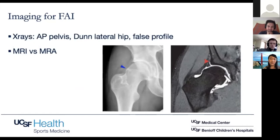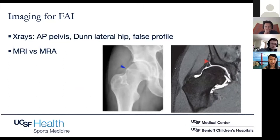I reserve the arthrogram study for revision scenarios — if you've had a hip scope before and I'm trying to look for reasons why it failed, or if a patient has a history of hip dislocation and the contrast can help show if they have a large capsular defect. The dye itself can cause a lot of irritation to patients who already have hip pain. Usually regular plain MRI is sufficient.